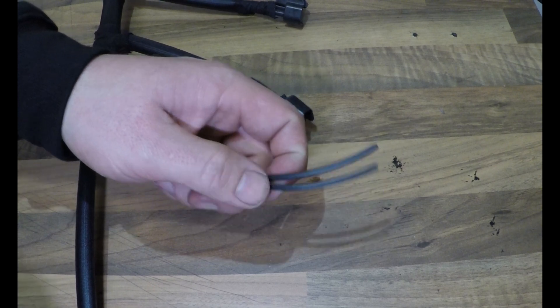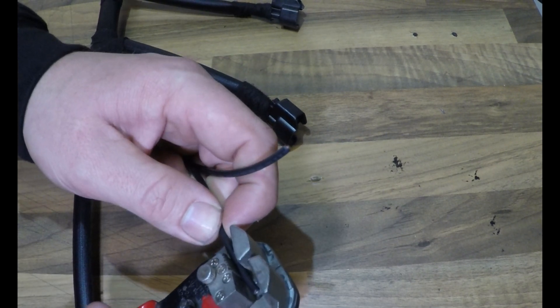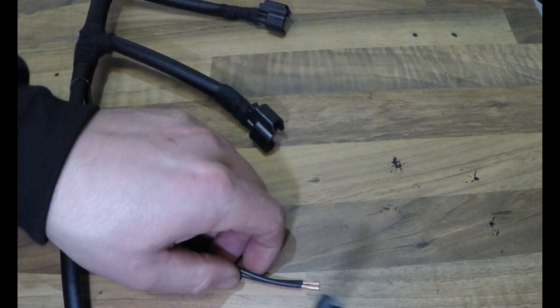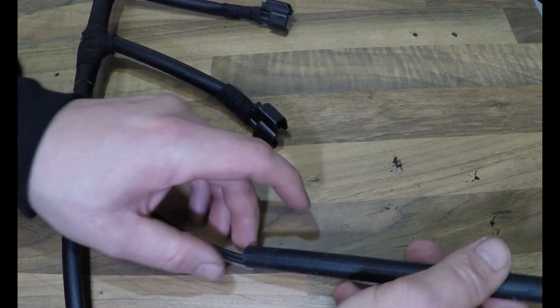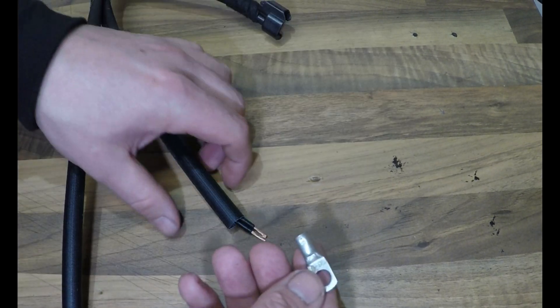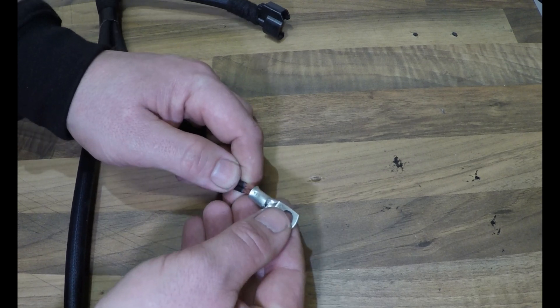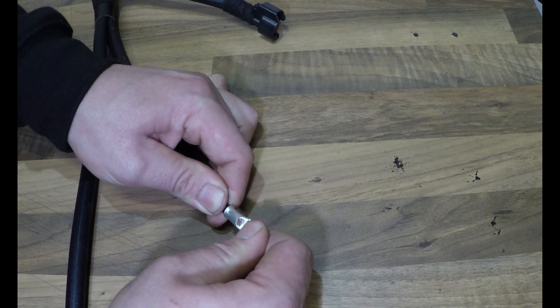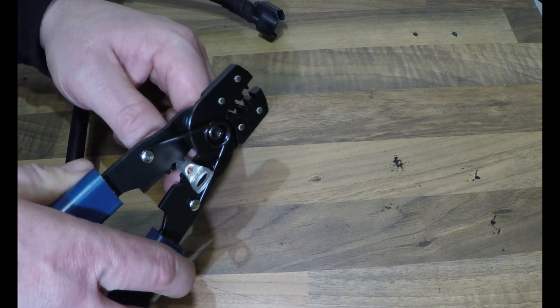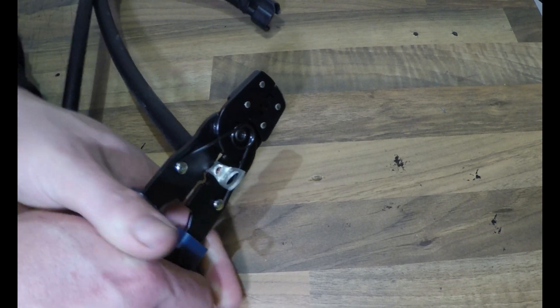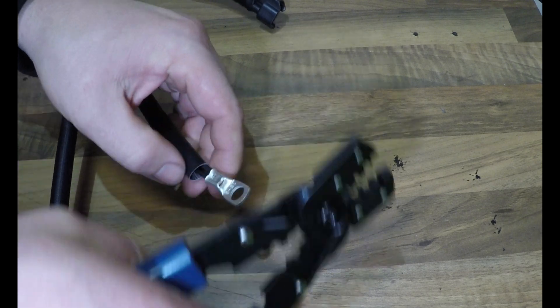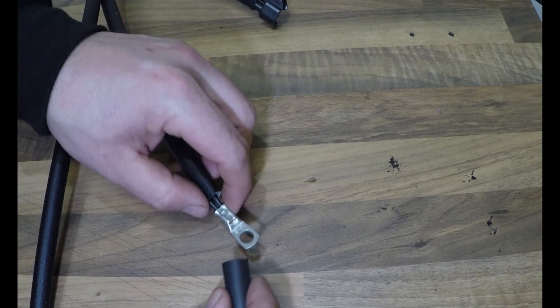And now the earth for the alternator. Strip the ends, pop the heatproof insulation on, and I've got a non-insulated crimp terminal to go on the alternator. Make sure that's right down in there, give the end a good squeeze down. And for this one I'm just going to put a little bit of heat shrink on the end.